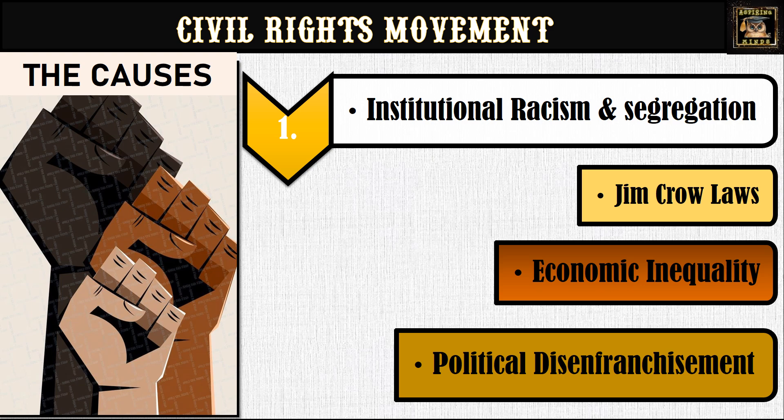Followed by this was political disenfranchisement. Many African Americans in the South faced a battle just to vote. States used tactics like literacy tests — complicated exams that even well-educated people would struggle to pass — only to prevent African Americans from voting. There were also poll taxes, fees you had to pay to vote, which many poor Black families simply couldn't afford. The whole system was rigged so African Americans could not have a voice in government, leaving them powerless in the face of injustice.